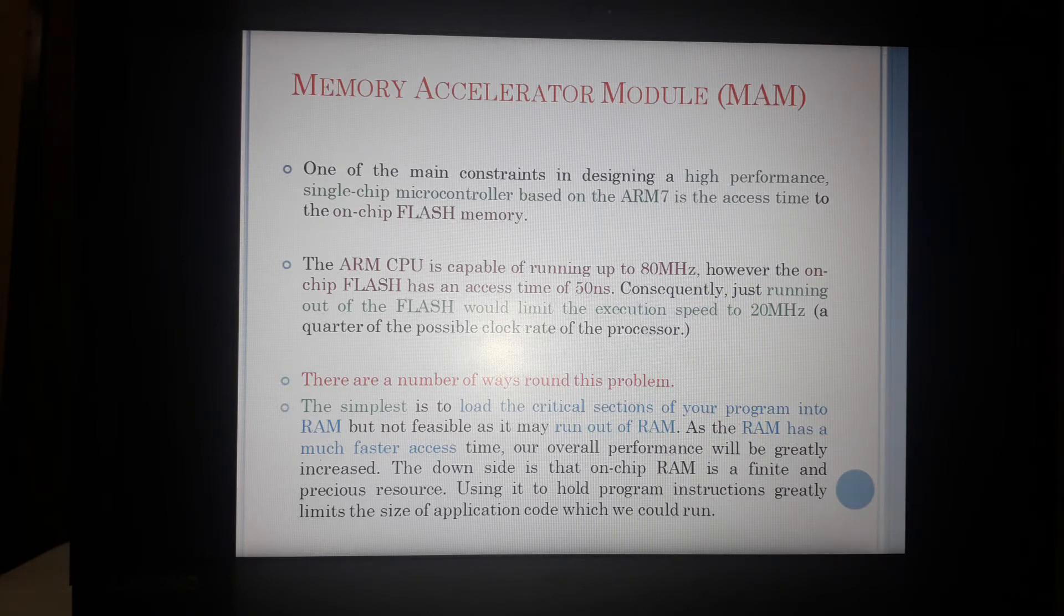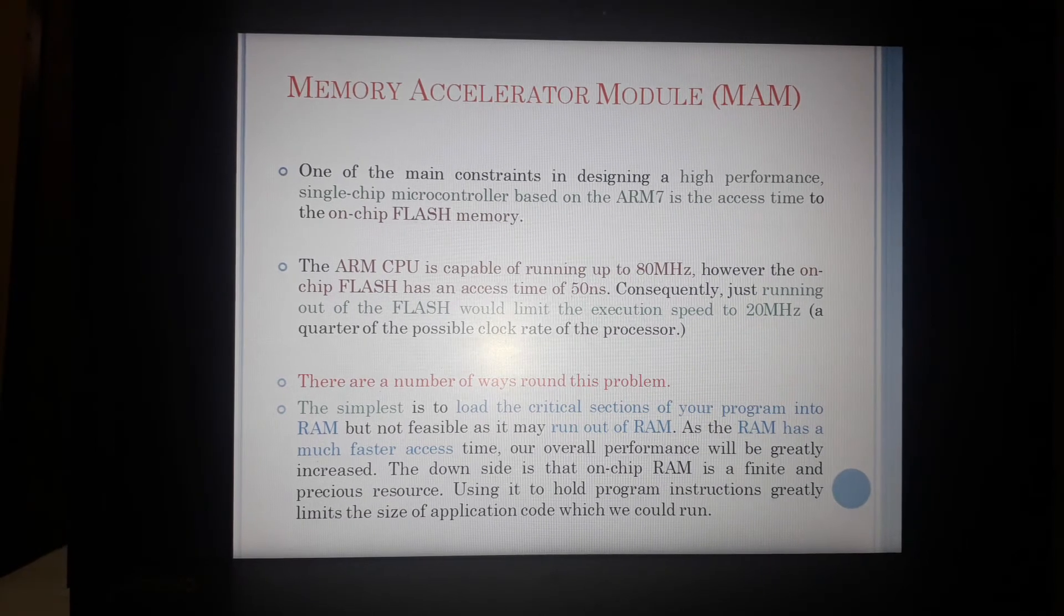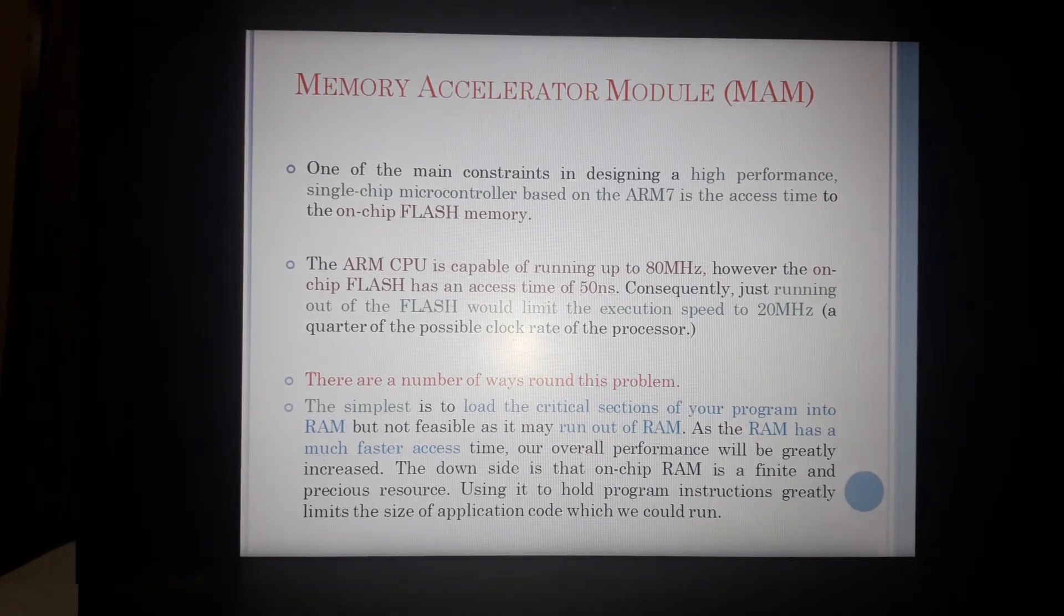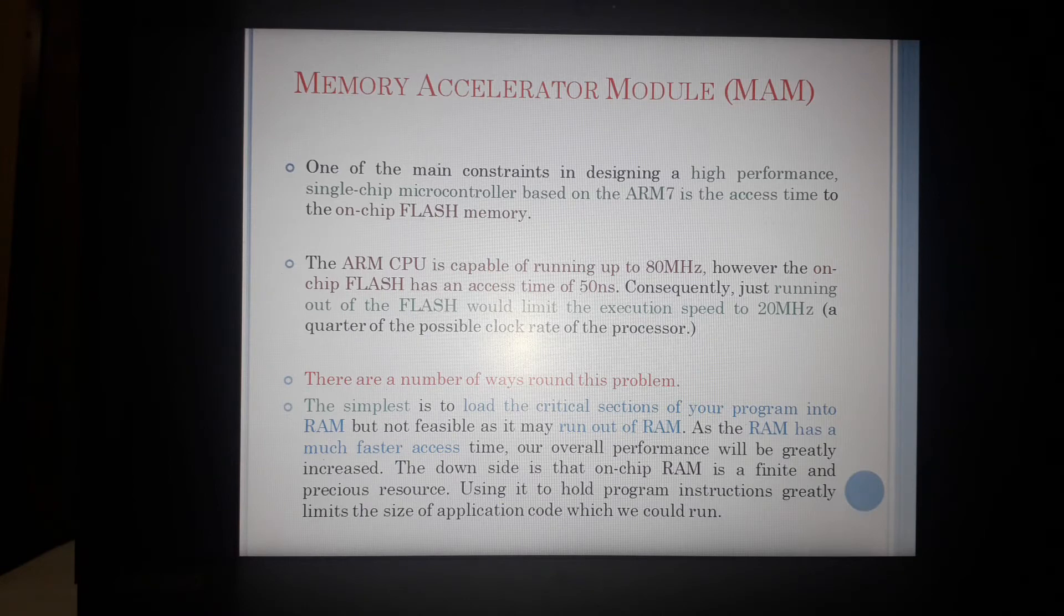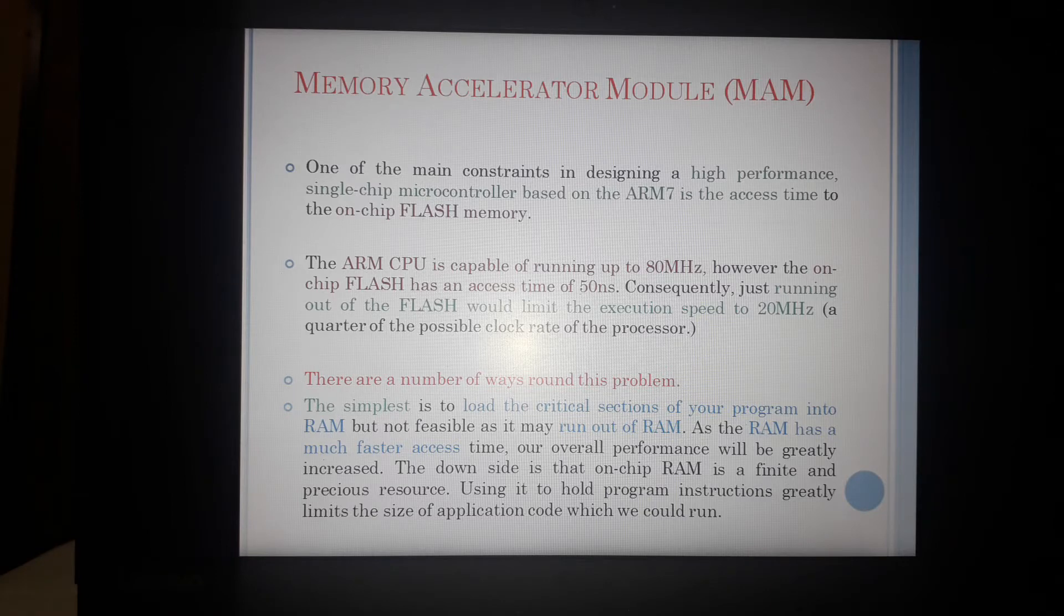For example, we have an ARM CPU which is running at 80 MHz and it is using flash. Flash is a fast memory, it is a parallel memory which has access time of 50 ns. But if I see the speed, if I divide 1 over 50, I get typically the speed of 20 MHz. So though my processor is able to process at the speed of 80 MHz, it is limited by memory access to just 20 MHz. So this is a big barrier to exploitation of the maximum processing speed of a processor.